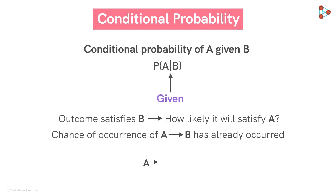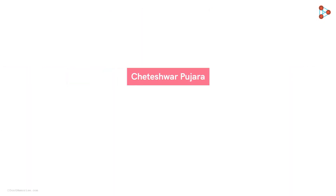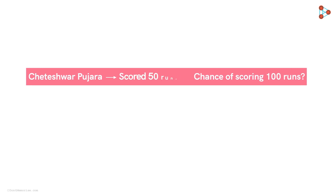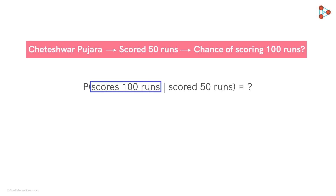If A and B are dependent events, the knowledge of the occurrence of event B is going to impact the chances of occurrence of event A. Let's understand this using an interesting example. We have Cheteshwar Pujara batting in the first innings of an international test match. How likely is it that he will score 100 given that he has already scored a half century? Here we have to find the probability that Pujara will score 100 in the first innings given that he has already scored 50 runs.